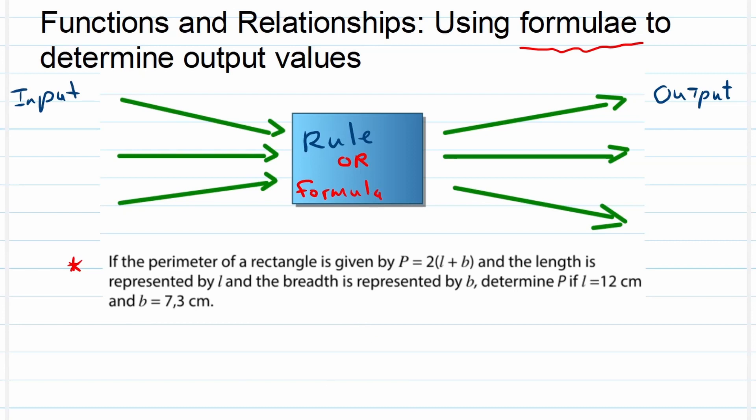If the perimeter of a rectangle is given by P equals 2 times L plus B and the length is represented by L and the breadth is represented by B. Determine P if L is 12 centimeters and B is 7.3 centimeters. So what's going on here?